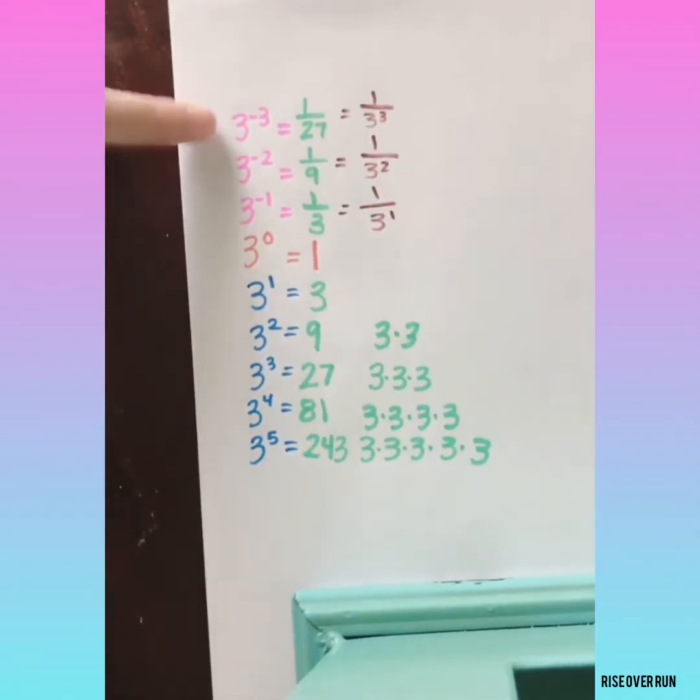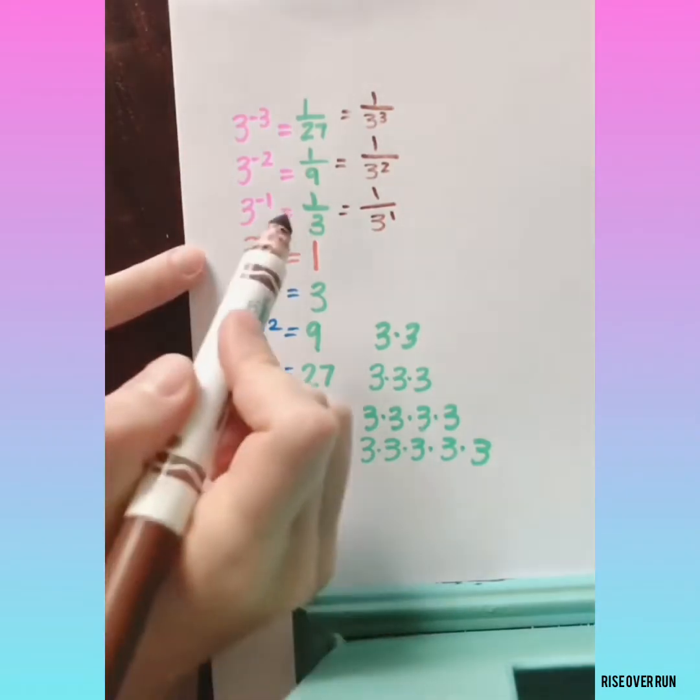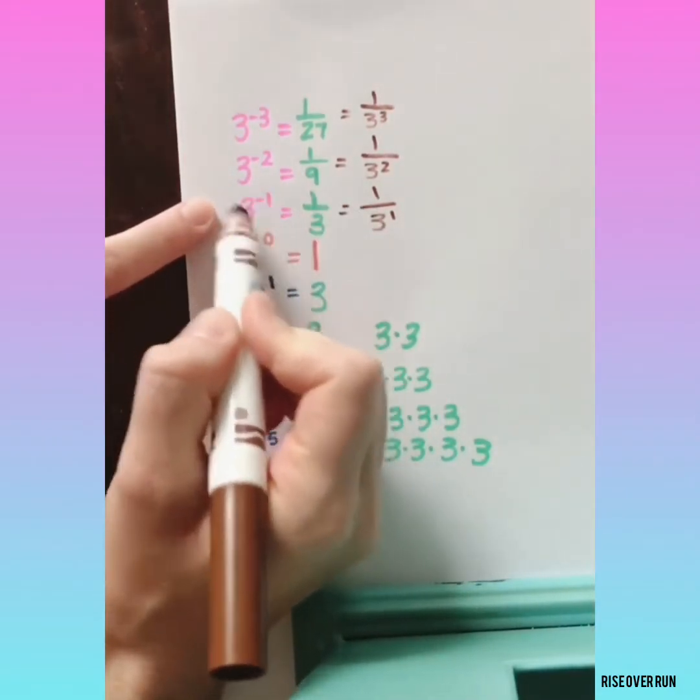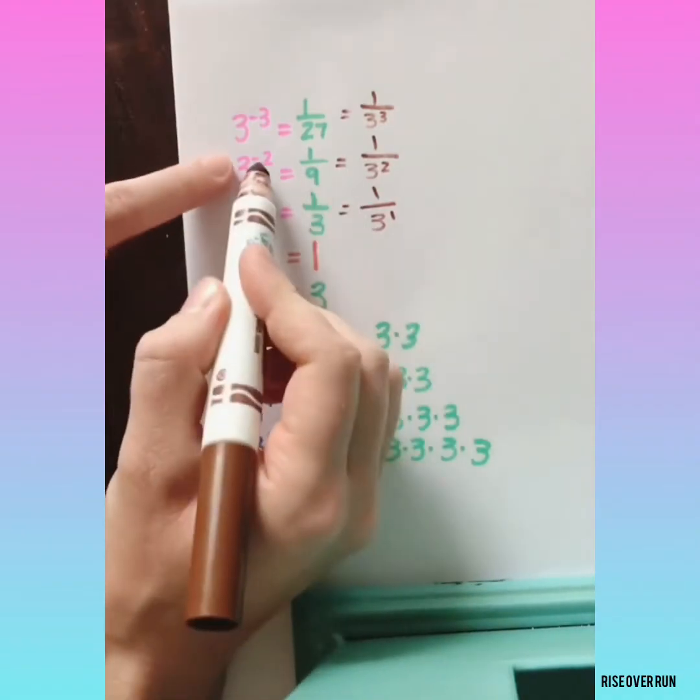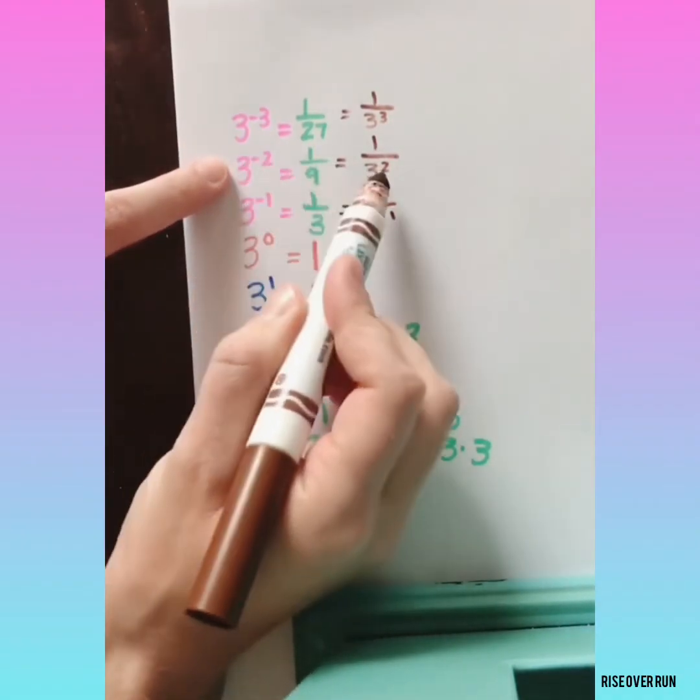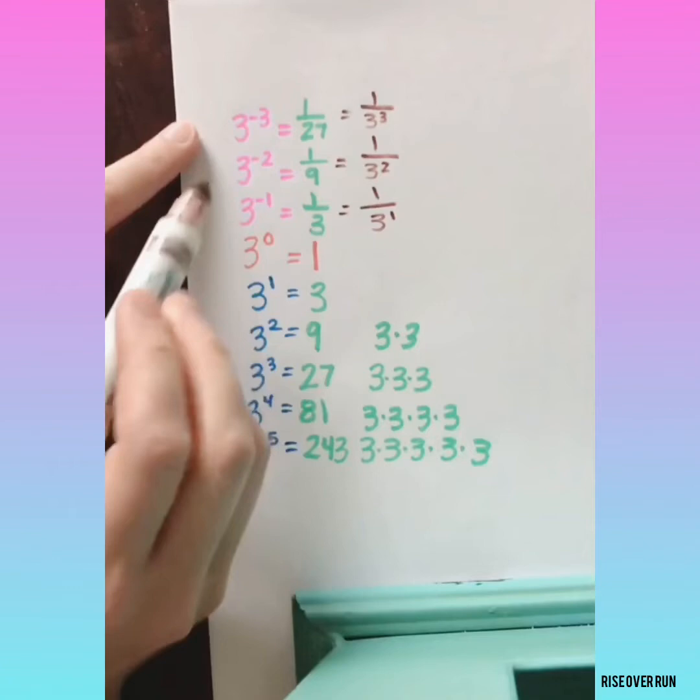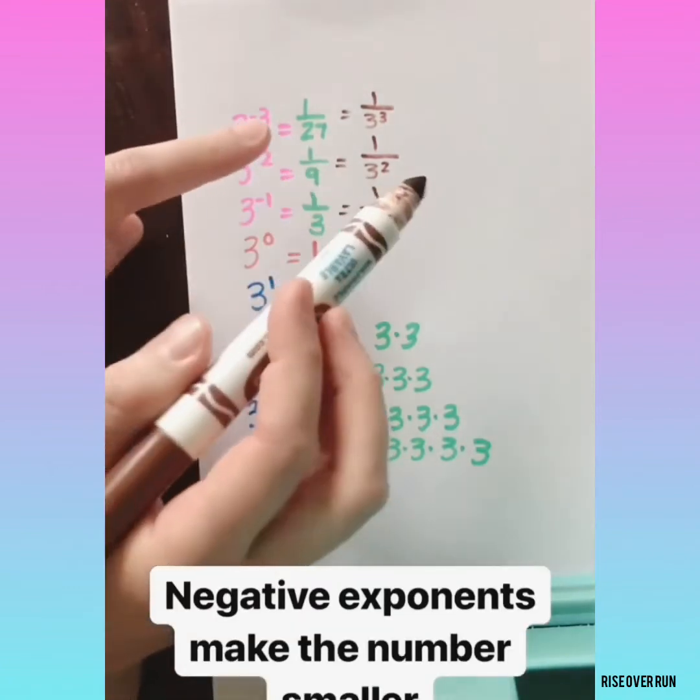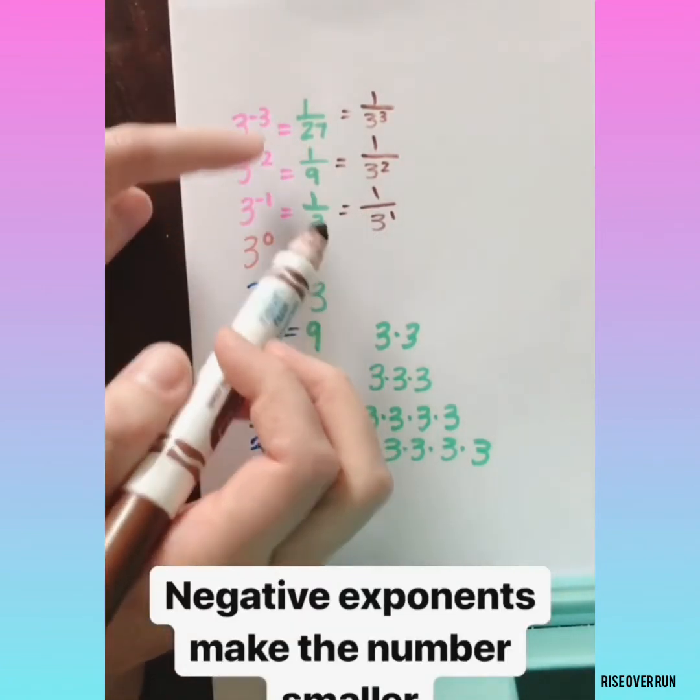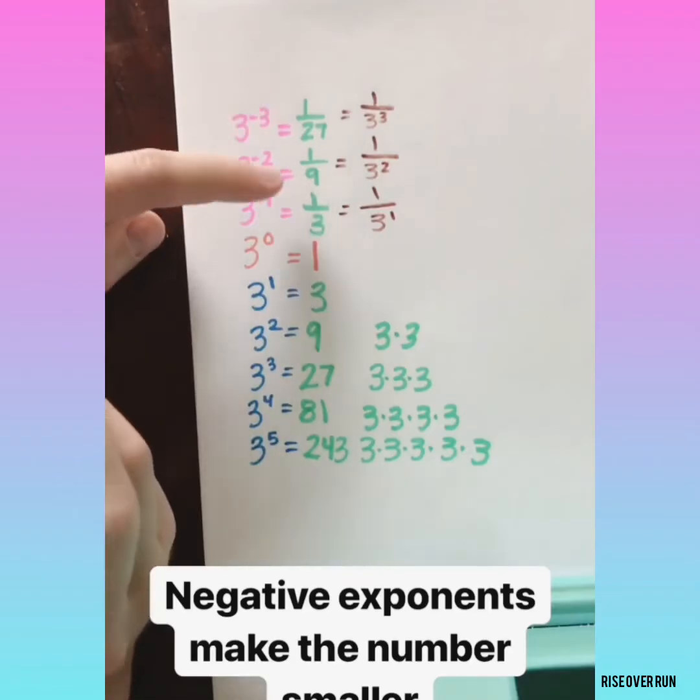Once you know the pattern, you can easily work with negative exponents. It creates a fraction and moves the whole thing to the denominator, but it keeps the same exponent, just makes it positive. Nothing about a negative exponent will turn your actual answer into a negative number. It just makes it smaller.